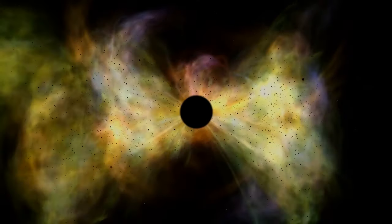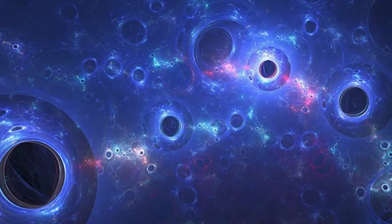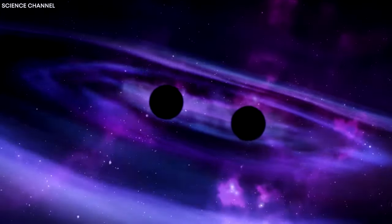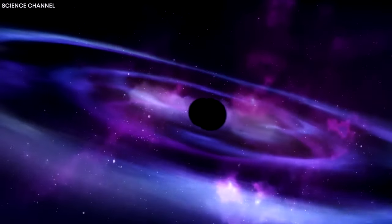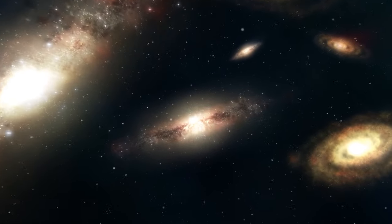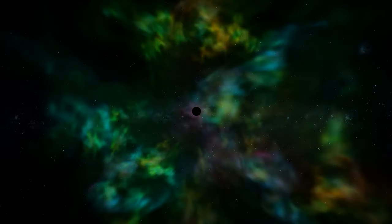Dark matter is an invisible form of matter that does not interact with light, but exerts gravitational effects on visible matter. In contrast, dark energy is the hypothetical force responsible for the universe's accelerated expansion. And so, the notion that antimatter could fall upward, defying the standard downward pull of gravity, was one of the ideas being explored.